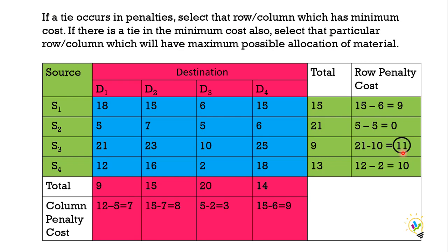If in case there is a tie in row penalty cost and column penalty cost — sometimes both values are the same — then follow this method: if a tie occurs in penalties, select the row or column which has a minimum cost. If there is a tie in the minimum cost also, select the row or column which will have maximum possible allocation of material.